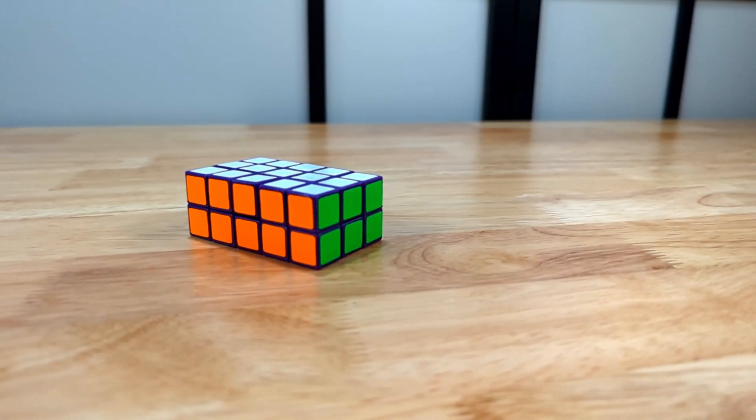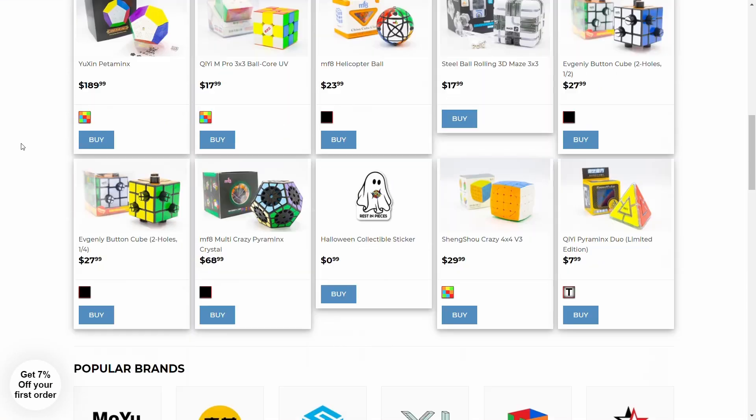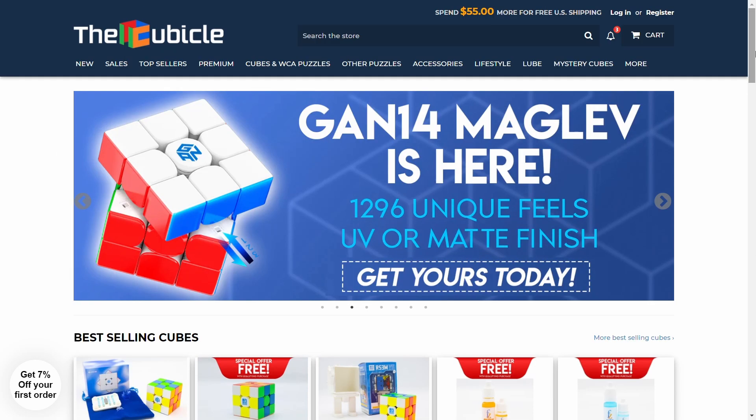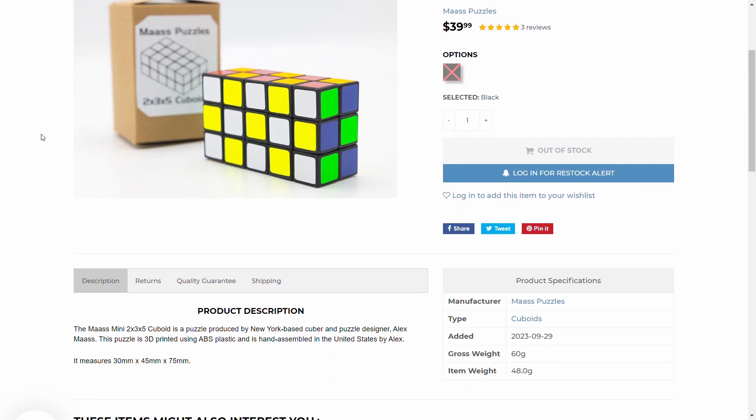It's being sold at a major speedcube retailer, the Cubicle. People scrolling through the products just see the 2x3x5 alongside the regular mass-produced puzzles as just another puzzle to consider purchasing.